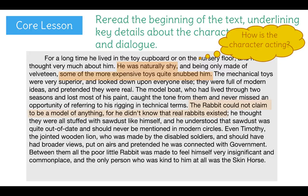Now, at about the middle of the page, it continues: 'The rabbit could not claim to be a model of anything, for he didn't know that real rabbits existed.' Well, this part seems important because it reveals Rabbit's thoughts. It tells me that he's a little simple-minded since he didn't know that real rabbits exist. It continues: 'He thought they were all stuffed with sawdust like himself, and he understood that sawdust was quite out of date and should never be mentioned in modern circles.' Now I'm noticing that Rabbit is acting a little embarrassed by the fact that he's so old-fashioned and simple. That seems to match with his shyness from up above.